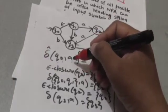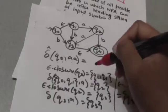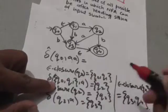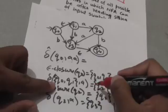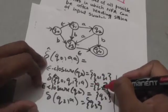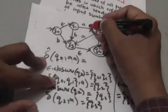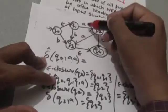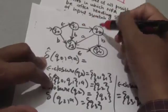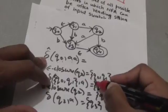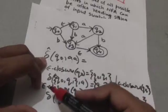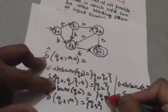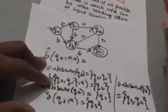Now apply the first input symbol of the string to this set of states. When we apply A to the set having two states Q0 and Q1, the result is a set having one state, that is Q2. When we apply A to Q0, there is no transition from state Q0 on input A, so the result is the set containing Q2. Now find the empty closure of state Q2. The empty closure of Q2 contains only one state, Q2, because from Q2 there is no empty transition.